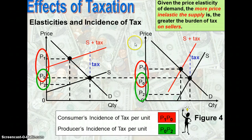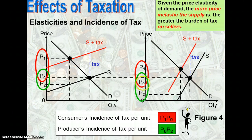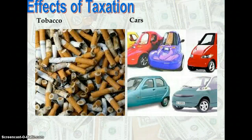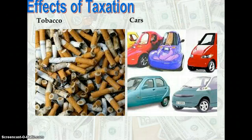Looking at the diagram itself, the more price inelastic supply — which is the diagram on the right — results in a greater burden of tax on the seller, indicated by a greater distance between P2 and P0 on the right-hand diagram compared to the left. That's all for the impact and incidence of indirect taxes on consumers and producers. In the tutorial, we will cover case studies using examples like tobacco and cars in the market. Thank you.